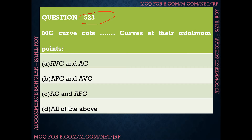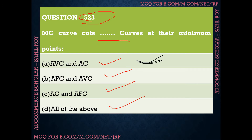Question number 523: The marginal cost curve cuts which curve at their minimum point? We have four options — first: average variable cost curve and average cost curve; second: average fixed cost curve and average variable cost curve; third: average cost curve and average fixed cost curve; fourth: all of the above. The correct answer is option A — the marginal cost curve cuts the average variable cost curve and average cost curve at their minimum points.